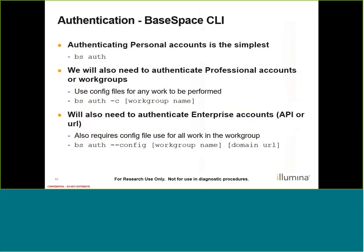Now that we've downloaded our scripts and they're available for use, the next step is actually authenticating our BaseSpace accounts. As some of you may be familiar, we have different levels of accounts available: personal, professional, and enterprise. Authenticating your personal account is the easiest — you just use the BS auth command. Once we start authenticating our professional accounts or our workgroups, we're going to have to create config files in order to properly designate which workgroup we're actually going to be using. For this, I would use the command BS auth -C and then the workgroup name.